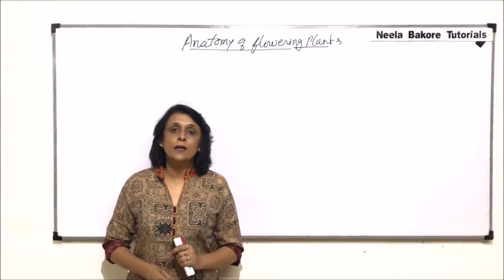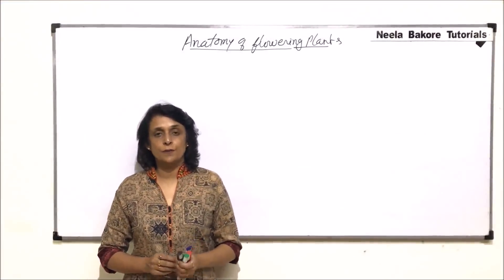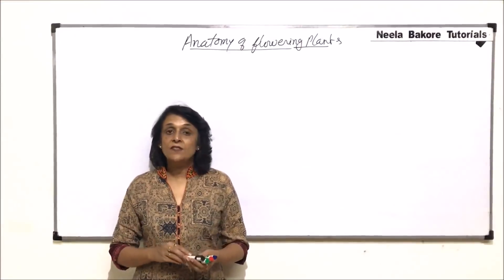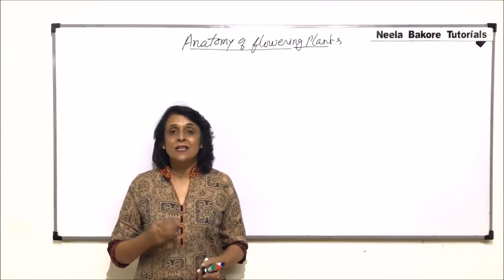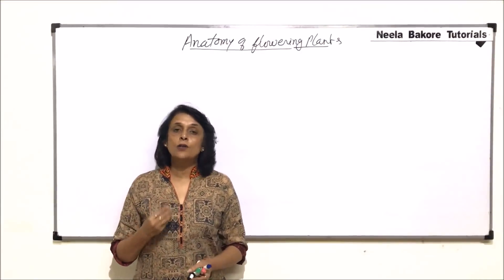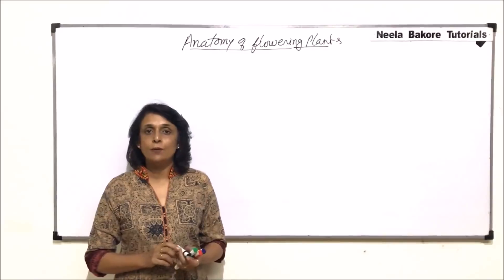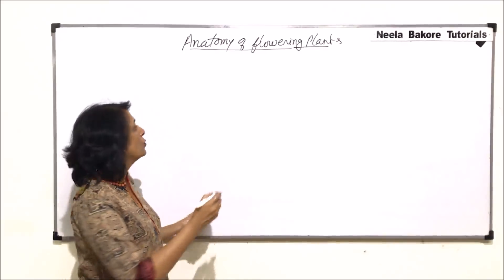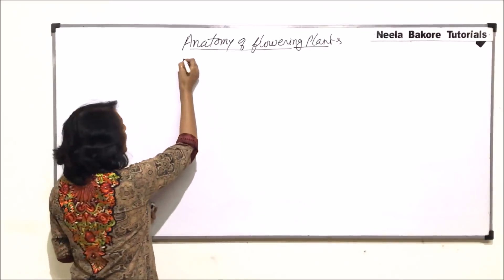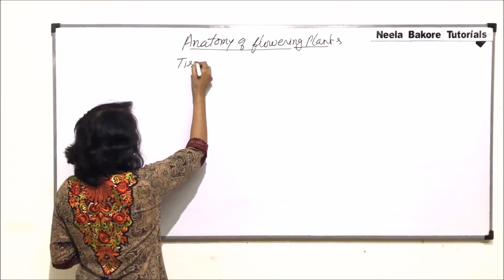We will now start with the tissue systems. We have seen all different types of cells or tissues which make up the plant body. Now these tissues combine to make the tissue system.